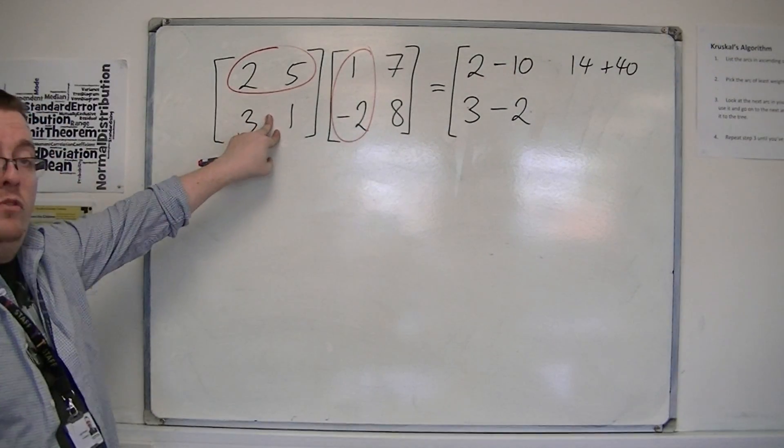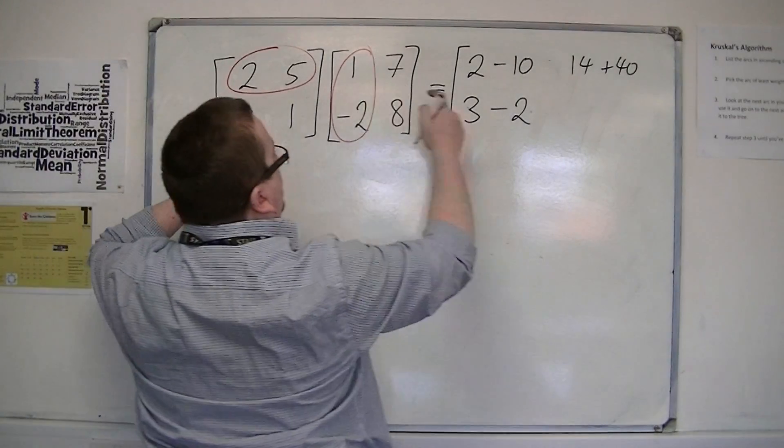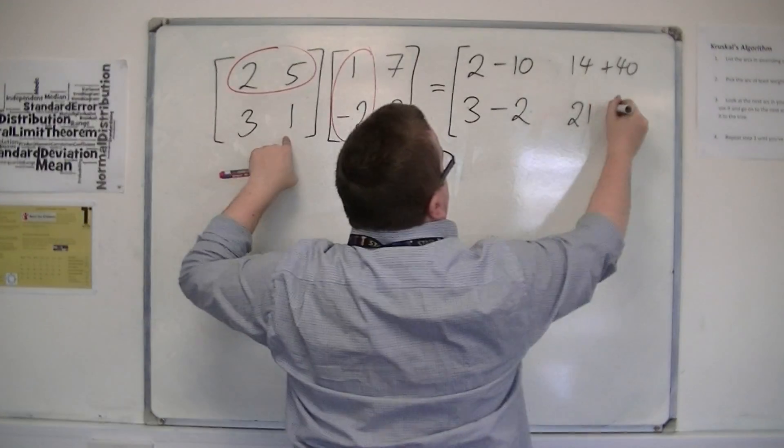Then we've got the final row multiplied by the final column. 3 times 7 is 21, 1 times 8 is 8.